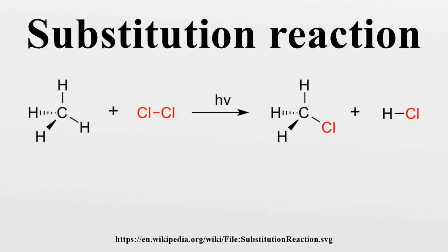An example of nucleophilic substitution is the hydrolysis of an alkyl bromide (R-Br) under basic conditions, where the attacking nucleophile is the base O⁻ and the leaving group is Br⁻: R-Br + O⁻ → R-O⁻ + Br⁻. Nucleophilic substitution reactions are commonplace in organic chemistry and can occur at a saturated aliphatic carbon or at an aromatic or other unsaturated carbon center.